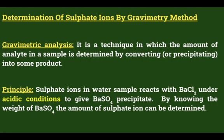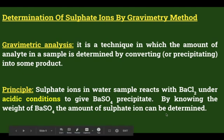Next is determination of sulfate ions by gravimetric method. Sulfates naturally occur as a result of leaching from sulfur deposits in the earth and are normally present at some level in all water systems. Gravimetric analysis is a technique in which the amount of analyte to be analyzed in a sample is determined by converting or precipitating it into some product. The principle is that sulfate ions in the water sample react with barium chloride under acidic conditions to give a barium sulfate precipitate. By knowing the weight of barium sulfate, the amount of sulfate ion can be determined.